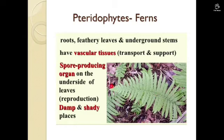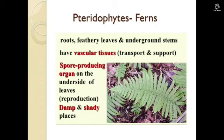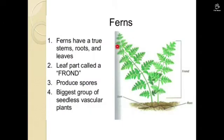They do not produce seeds — they produce spores. Pteridophytes or ferns have feathery leaves and underground stems, and they have vascular tissues for transport and support. They also have an underground organ and thrive in damp and shady places.